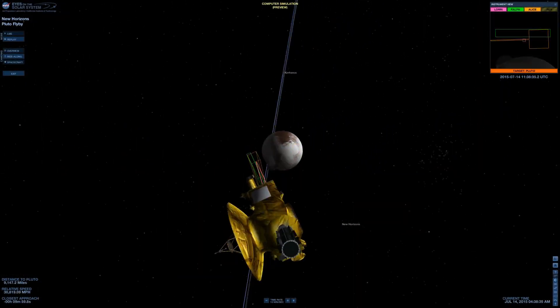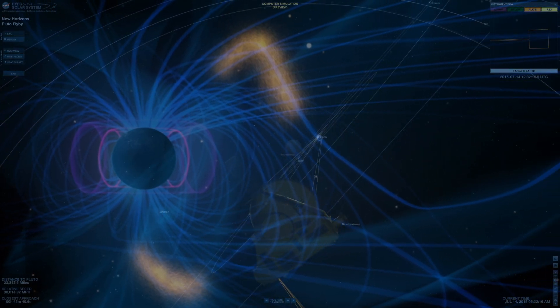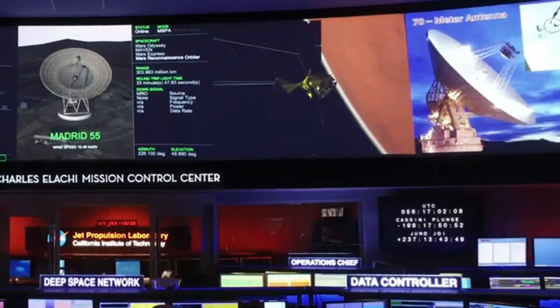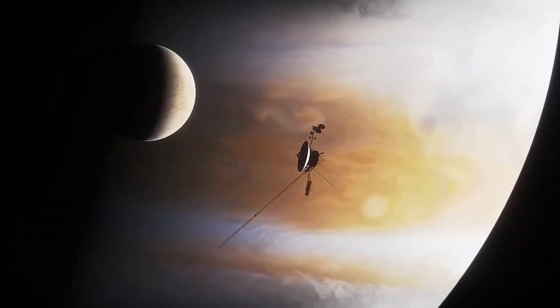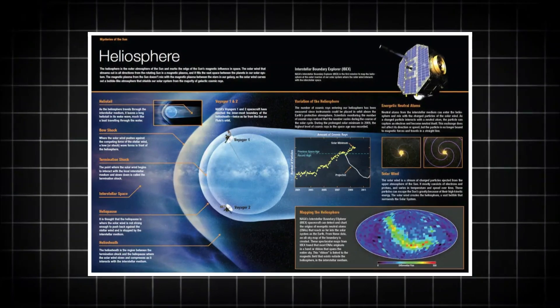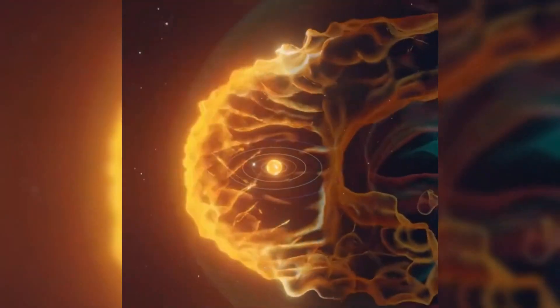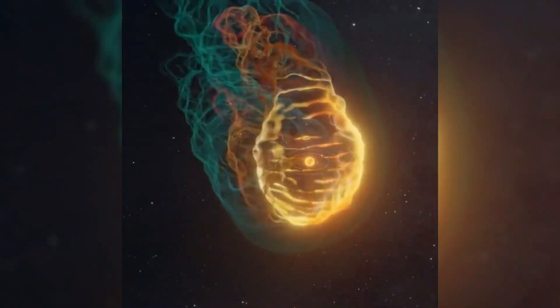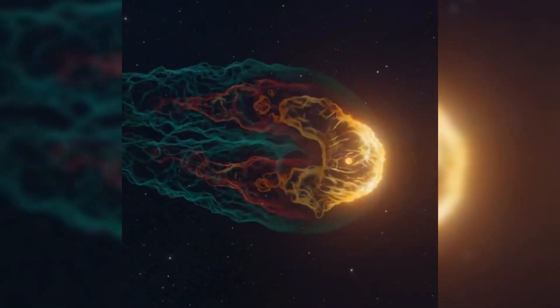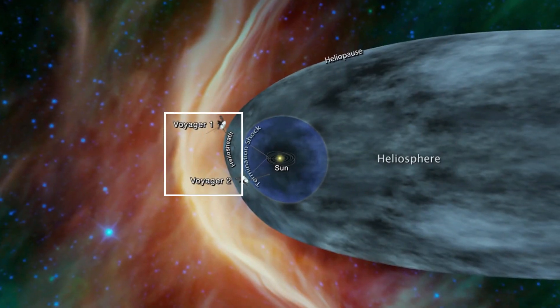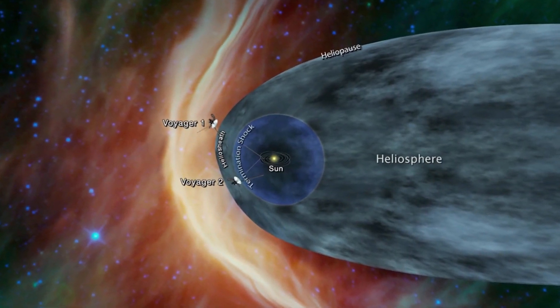Each Voyager still carries four functioning instruments. They measure magnetic fields, cosmic rays, plasma density, and radio waves. Through them, we're getting real-time data from interstellar space, a place that until now only existed in theory. That data is painting a new picture of the heliosphere. It may not be a neat spherical bubble as we once thought. Instead, it's likely stretched, warped into a teardrop or comet-like shape. Twisted by galactic winds and the sun's own magnetic quirks, Voyager is slowly tracing its outline with every kilometer it travels.